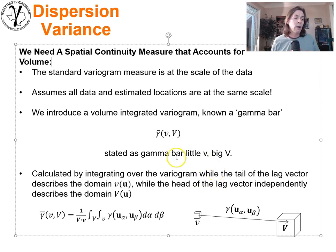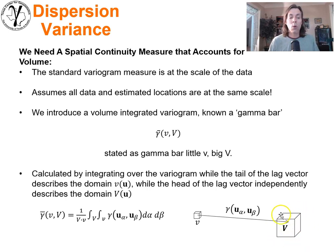The way we're going to calculate a gamma bar value is pretty straightforward. We're going to integrate a variogram model. We calculate a positive definite variogram model—we've already got that. Then we'll integrate that variogram model while the tail of the vector is able to scan or be integrated over one volume and the head of the variogram vector is scanned or integrated over another volume.